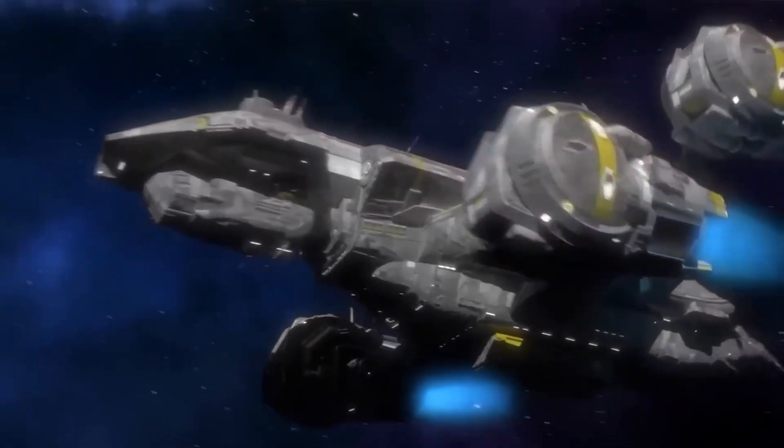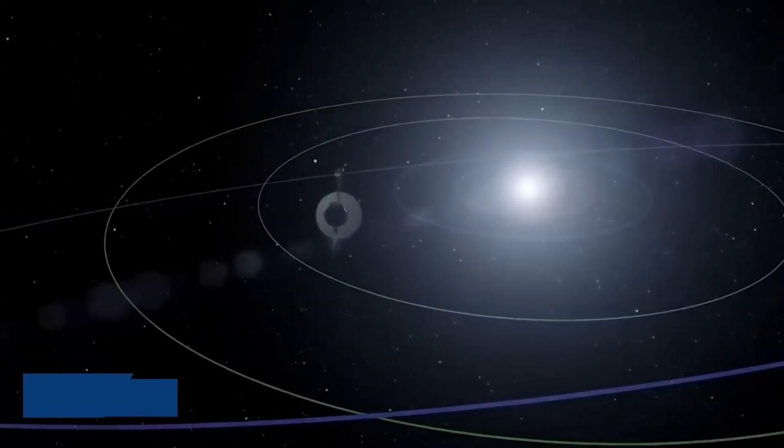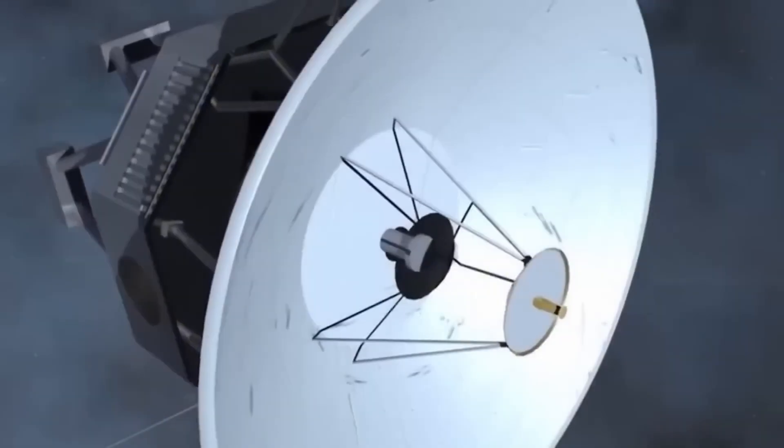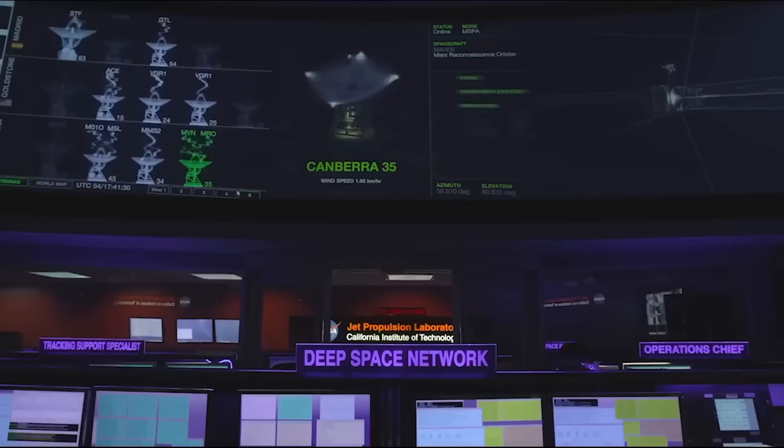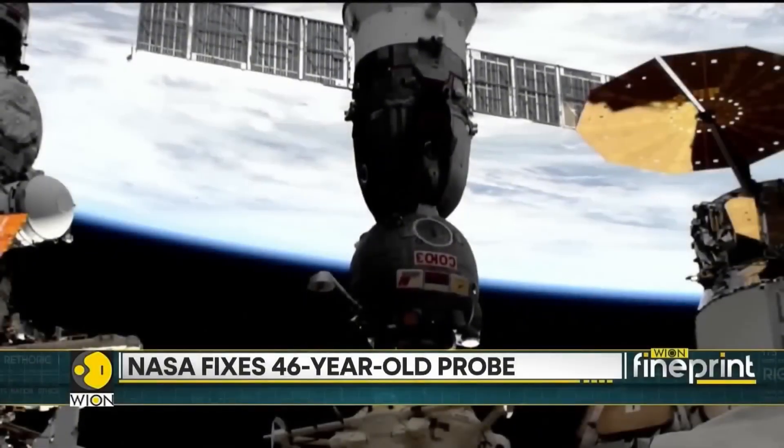NASA says its Voyager 1 probe, the most distant man-made object in the universe, is once again sending usable information back to Earth. Launched in 1977, Voyager 1 has made headlines for more than 45 years by revealing some of the most shocking and unexpected secrets of interstellar space.